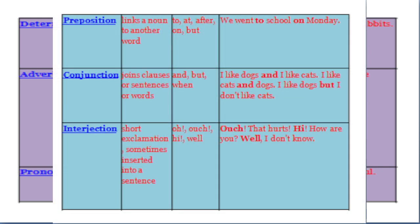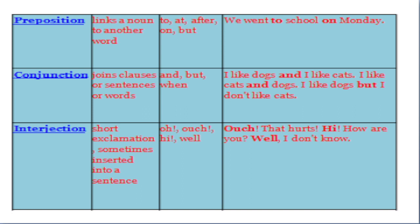Again, here you can find — you can stretch through the screen. Here you will find information about prepositions with a few examples. It's generally linked in a noun with it of another word. Three examples that come under prepositions are: to, at, after, on, and but. For example, 'We went to school on Monday' — here the prepositions 'to' and 'on' show the relationship between two words, like a noun and a verb, and a noun and a noun.